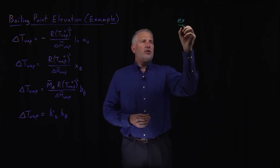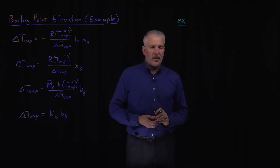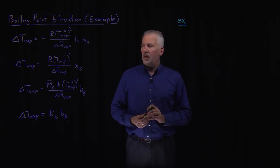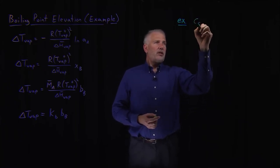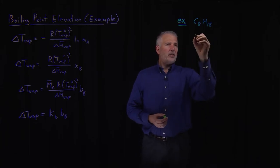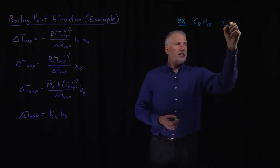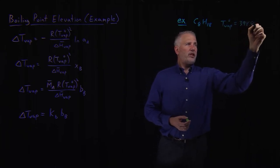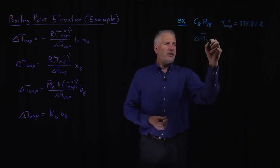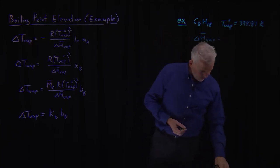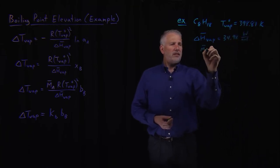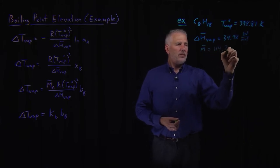Let's do another example of computing a boiling point elevation constant like we did for the freezing point elevation constant, but instead of doing it for water this time, let's choose a different solvent. Let's say that the solvent we're interested in is octane, n-octane. So n-octane has a boiling point of almost 400 Kelvin, a little higher than water. It has an enthalpy of vaporization of 34.98 kilojoules per mole, and its molar mass is 114 grams per mole.